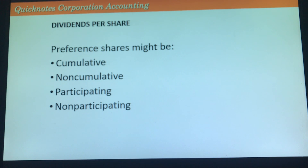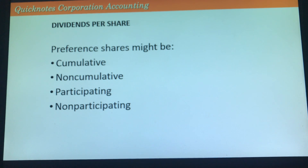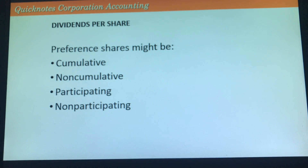For dividends per share, take whatever amount of cash dividends was given to both preference shares and ordinary shares, divide by the number of outstanding shares for each class, and that gives you the dividends per share.